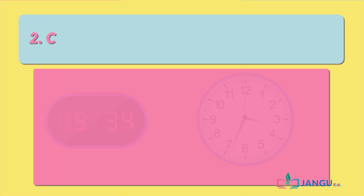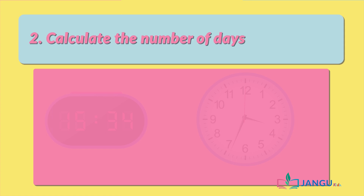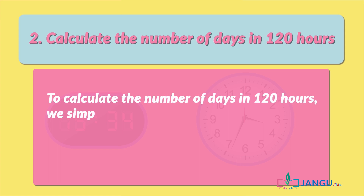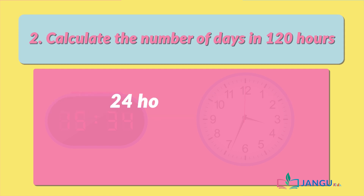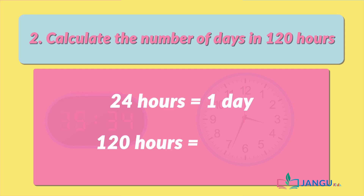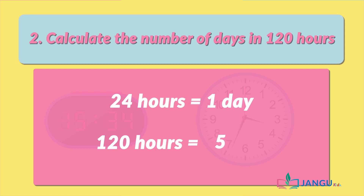Number 2: Calculate the number of days in 120 hours. To calculate the number of days in 120 hours, we simply divide by 24. So if 24 hours make 1 day, then 120 hours will make 120 divided by 24, which equals 5. Therefore, 120 hours makes 5 days.